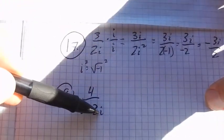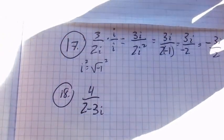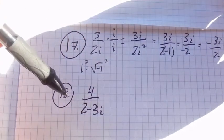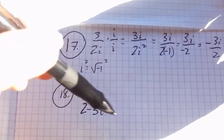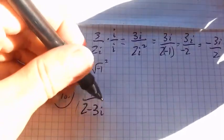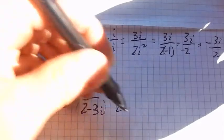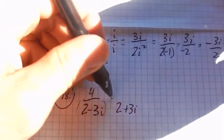In the sense that we still need to get that i out of the denominator. But, we can't just multiply by i, it won't get rid of it. So what we're going to use is the conjugate of this. This is 2 minus 3i. Let me use 2 plus 3i.